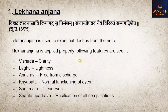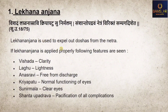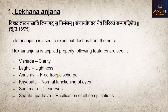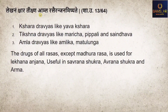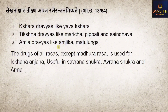First type: Lekhananjana. It is used to expel doshas from the netra. When applied properly, the following features are seen: Vishyadam (clarity of eyes), Laghu (lightness), Anusravi (free from discharge), Kriya Patu (normal functioning), Sunirmala (clear eyes), and Shantopadravam (pacification of all complications). Sharangadhara states that Ksharadravyas like Yavakshara, Tishnadravyas like Maricha, Pippali, Saindava, and Amladravyas like Amalaki and Matulunga are the drugs used. All rasas except Madhura rasa are involved in preparation of Lekhananjana.